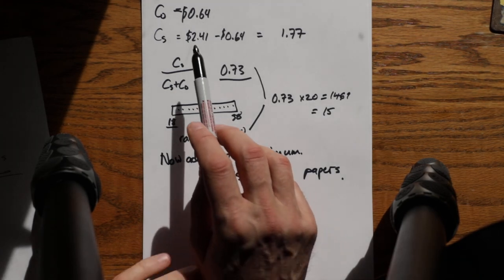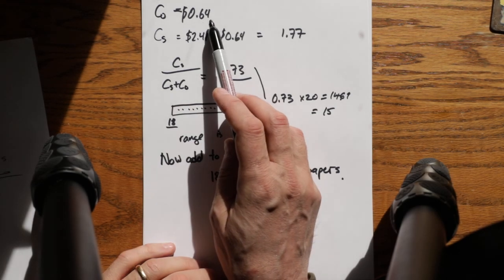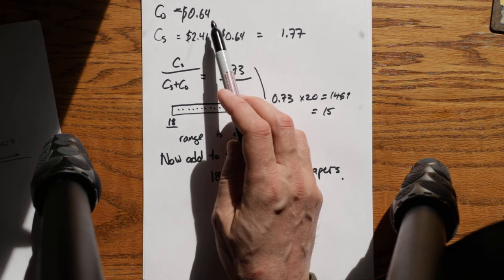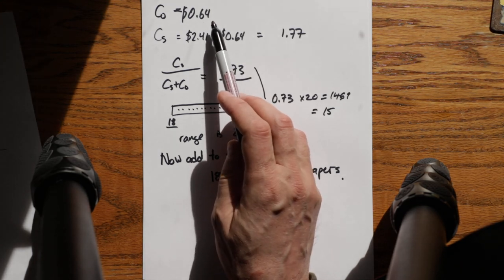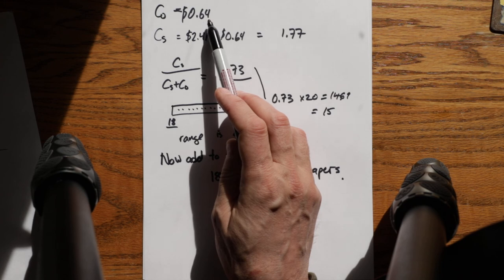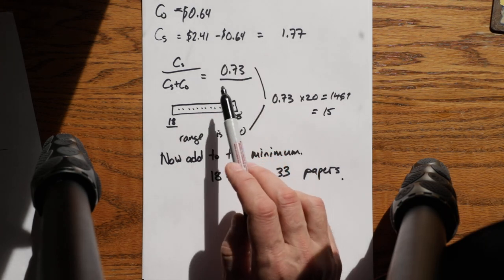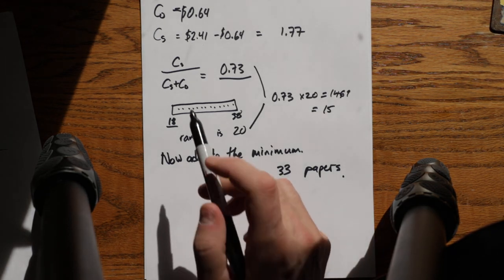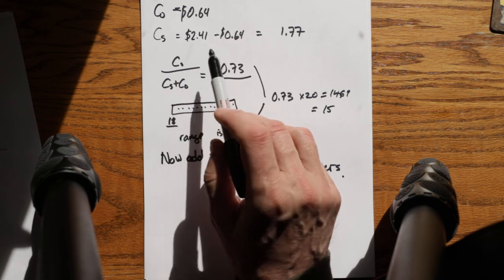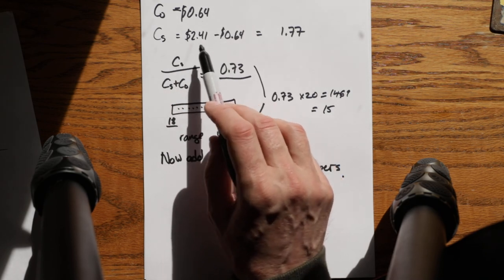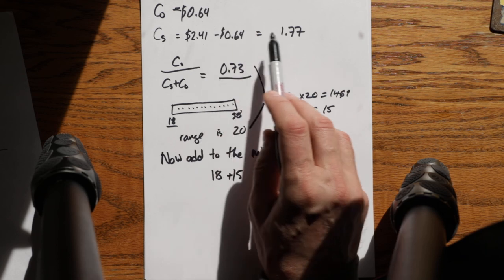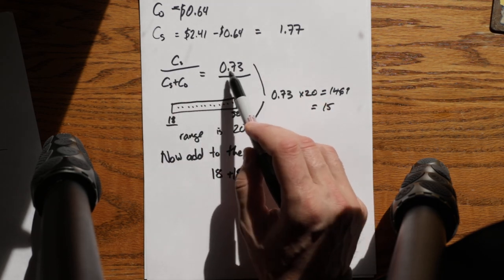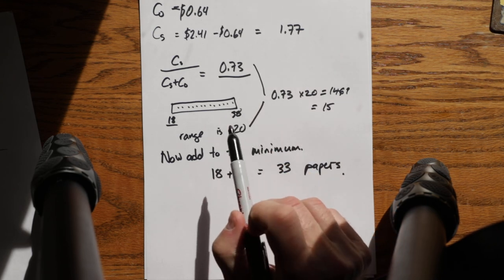What happens then if your cost of over ordering goes up? If the newspapers cost you a dollar, then this ratio would go down. Your minimum order would go down. What happens if your cost of shortage goes up? So if you could sell them for three dollars, this number gets bigger, that number gets bigger, and your critical ratio goes up.